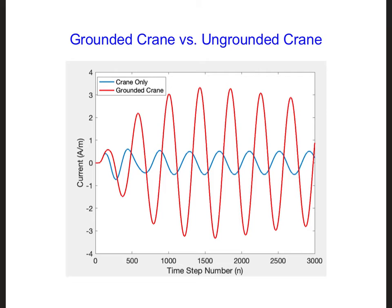We can see that grounding the crane increased the current on the crane. Why do you think the current would increase?